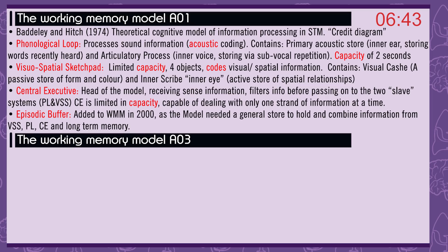The episodic buffer was added in 2000. The working memory model needed a store to hold and combine information from the visuospatial sketchpad, the phonological loop, the central executive, and long-term memory.